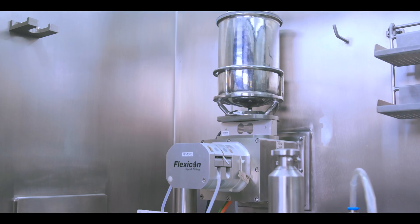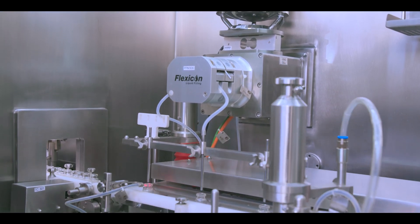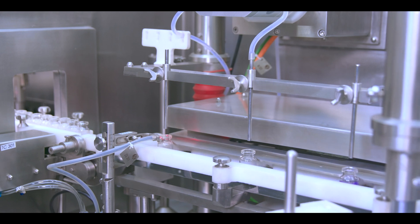The vial liquid filling and stoppering machine works under a positive pressure isolator. The filling is done by means of peristaltic pump.